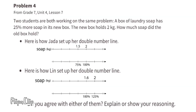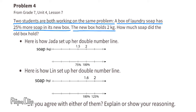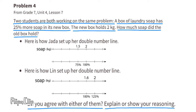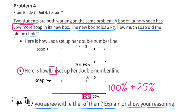Problem number four from 7th grade Unit 4 Lesson 7: a box of laundry soap has 25% more soap in its new box. The new box holds two kilograms. How much soap did the old box hold? I agree with the way Lynn set up her double number line. The old box represents 100% and the new box holds 25% more — 100 plus 25 equals 125%. The new box weighs two kilograms and is 125% of the old box.